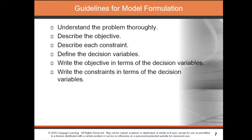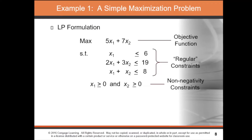Next, define your decision variables, then write down the objective in terms of the decision variables, and write down the constraints in terms of the decision variables. These guidelines have already been applied in Chapter 1.